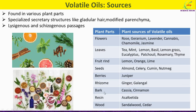Volatile oils are also produced from the bark of cassia or cinnamon, as well as the resin of asafoetida, commonly known as hing. They are also produced from the wood of sandalwood and cedar. These photographs show the various sources of volatile oils.